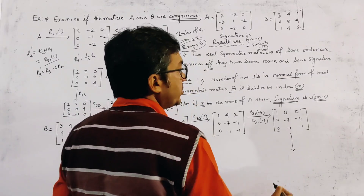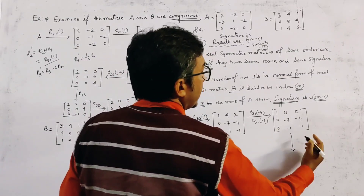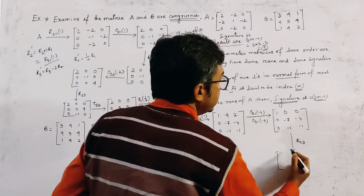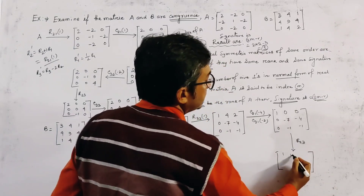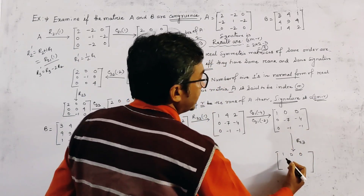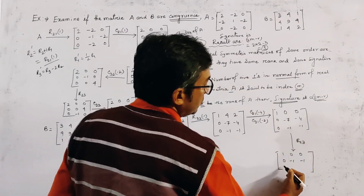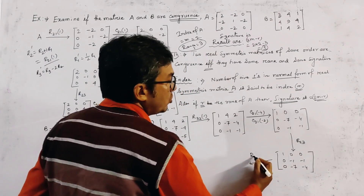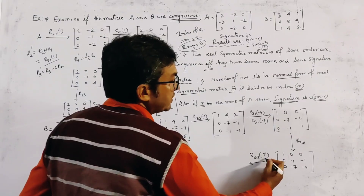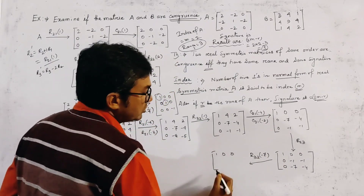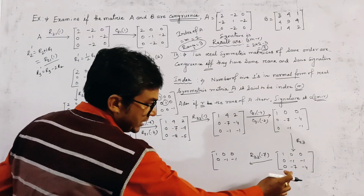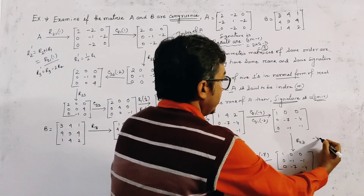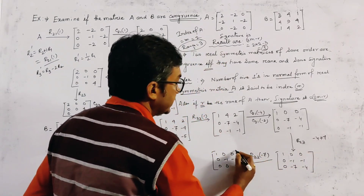We then interchange row 2 and row 3 with operation R23, giving [1, 0, 0], [0, -1, -1], [0, -7, -4]. We then apply R3(2, -7), giving [1, 0, 0], [0, -1, -1], [0, 0, 3]. Then we apply another column operation, giving [1, 0, 0], [0, -1, 0], [0, 0, 3].